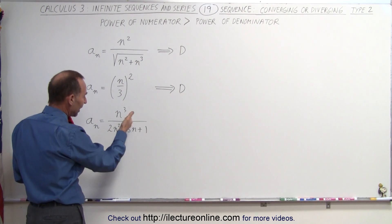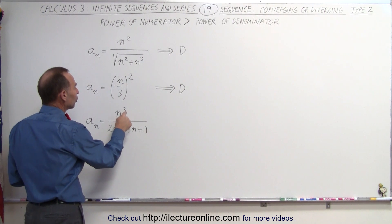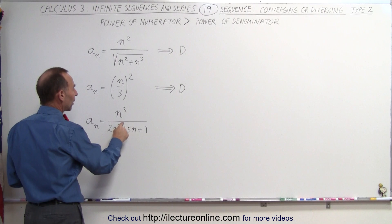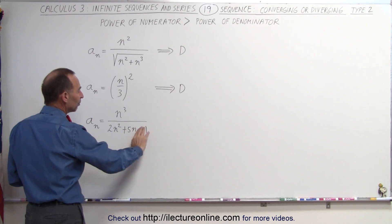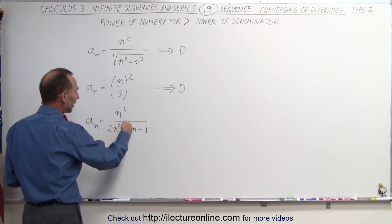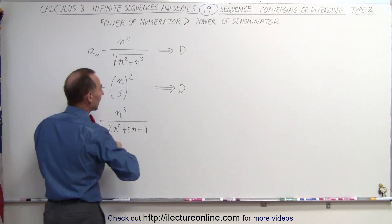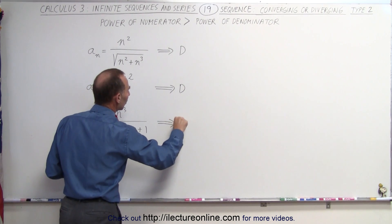And here's a classical case. We can see that we have n cubed in the numerator, and the largest exponent here is n squared. We can ignore 5n plus 1, so you can simply see that the exponent in the numerator is larger than the exponent in the denominator, so again this sequence will diverge.